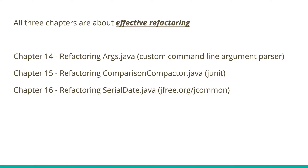In chapter 14, he refactors a custom code Args.java, which the author wrote as an example of a command-line argument parser. It's a breeze to read that chapter — you will see how the refactored code is so easy to understand compared to the previous code. Chapter 14 has a huge emphasis on the benefits of clean, refactored code. It's all about code changes with a lot of code snippets showing how Args.java is refactored into various marshallers, argument parsers, and argument types.